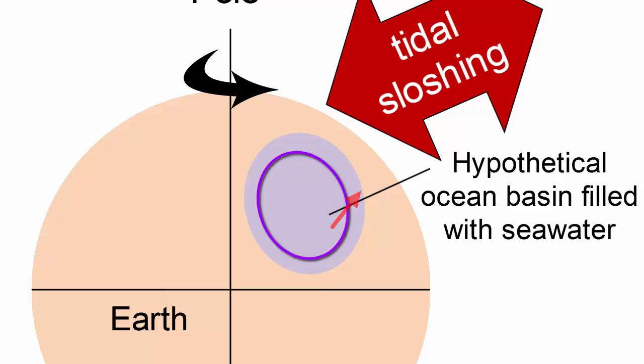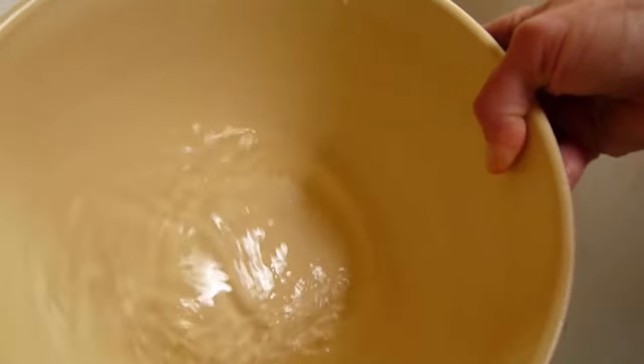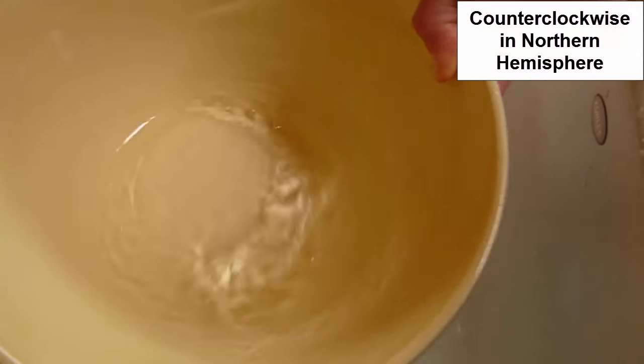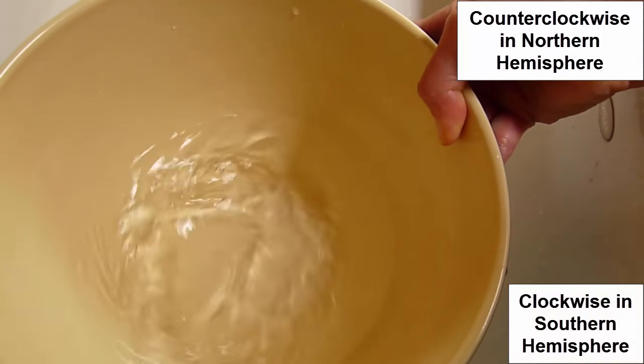Combined together, this sloshing around the edges of the basin creates a rotary wave with a 12-hour and 25-minute period, much like water sloshing around the outside of a bucket, counterclockwise in the northern hemisphere and clockwise in the southern hemisphere.